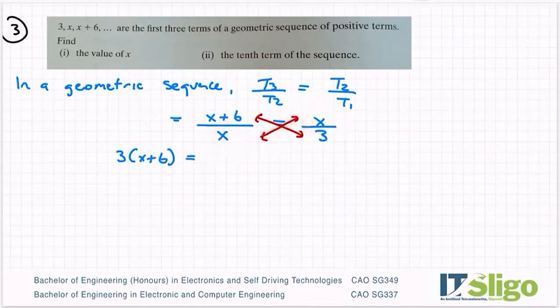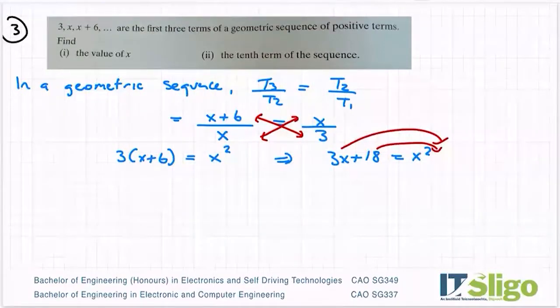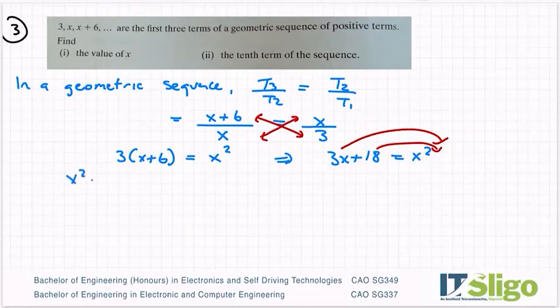Okay, follow this cross. So I get 3x plus 18 is equal to x squared. Let me form my quadratic, because that's exactly what this is. So I'm going to bring everything over that side and get x squared minus 3x minus 18 is equal to 0.